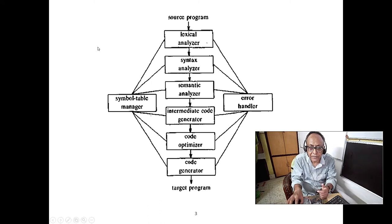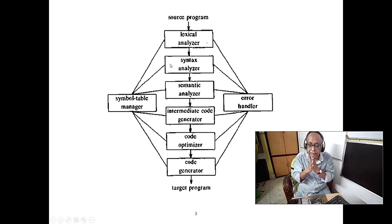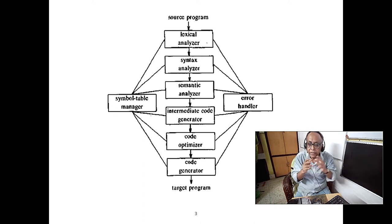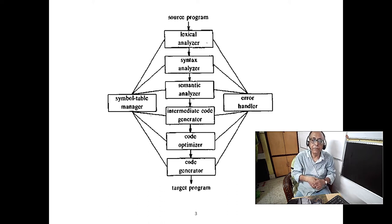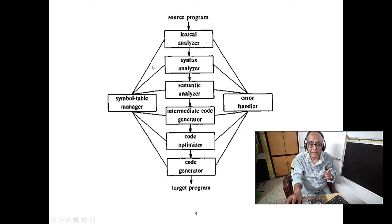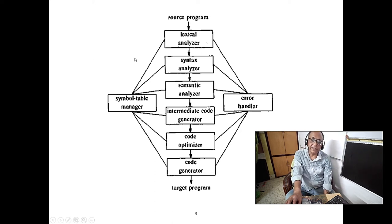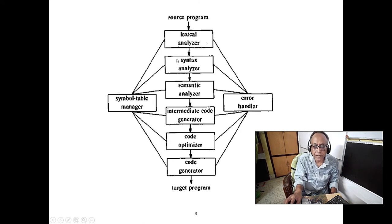This is the parsing stage. We take a series of tokens, apply language rules, and the compiler checks whether the program is legally generated. This is called parsing, and there are two famous parsing techniques: top-down parsing and bottom-up parsing.